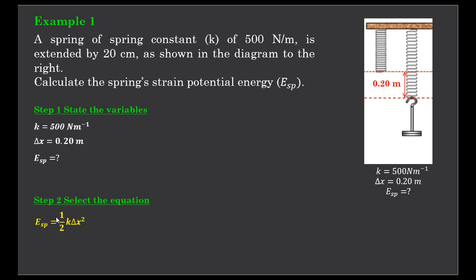And of course we're asked to calculate the strain potential energy. Select the correct equation, which is strain potential equals a half K delta x squared, and we simply substitute in and solve. So for K we have the value of 500 newtons per meter, and for delta x we have 0.2 of a meter. So you can half the 500 and square the 0.2, and you end up with strain potential equals 250 multiplied by 0.04, and that comes out to 10 joules.